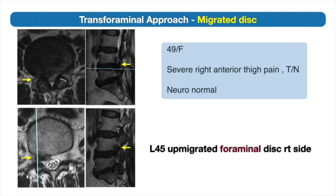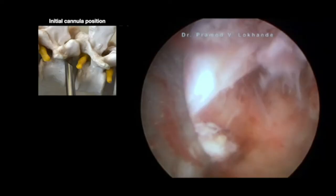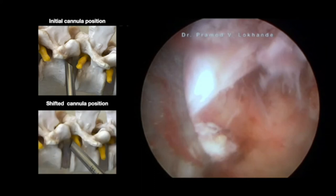Another case: an up-migrated foraminal disc herniation at L4-5 level on the right side. To protect the exiting nerve root, we place the working channel on the lower pedicle. We identify the pedicle first, then the surface of the disc, then we gradually shift the working channel upwards to retract the exiting nerve root and identify the up-migrated disc herniation.